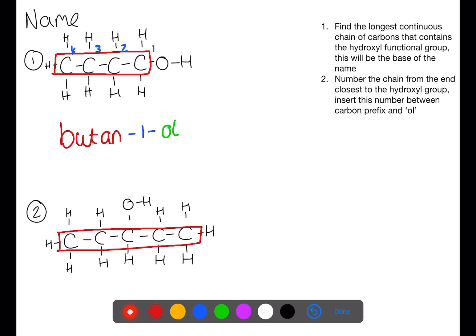In this second example we have five carbons so this is based on pentane. We number from the end closest to the functional group, but as it is symmetrical then either way it will be fine. The hydroxyl functional group is on number three and we end the name with 'ol'.